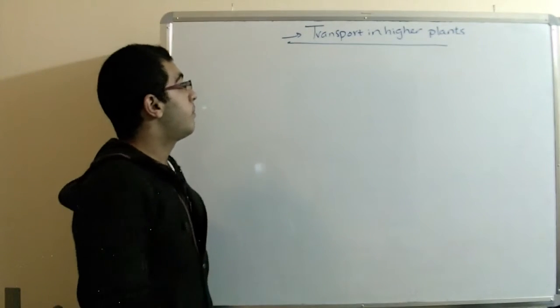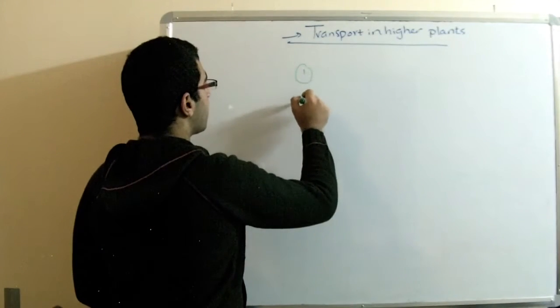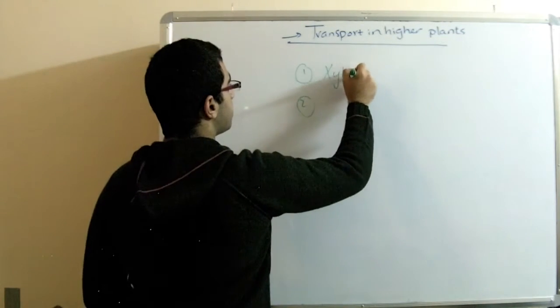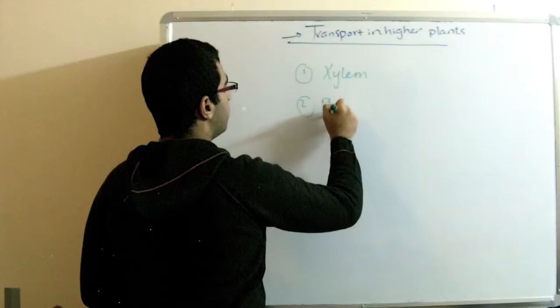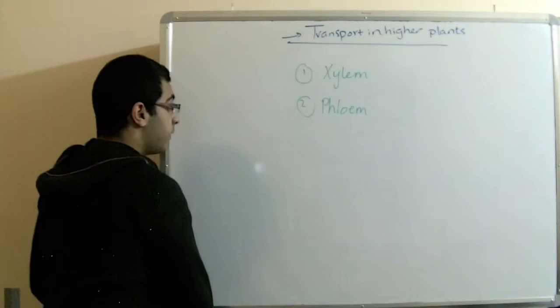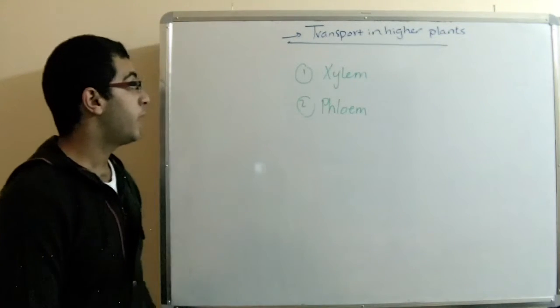Actually the main sites of transport in the higher plants are the xylem and the phloem. So that both of them act like arteries and veins in the human body.